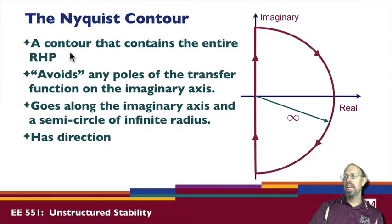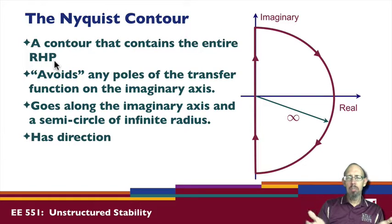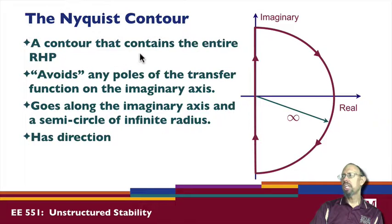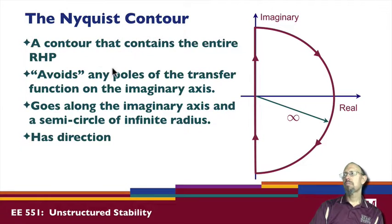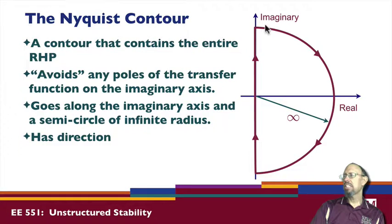The Nyquist contour is basically a contour that contains the entire right-half plane. We often think of a plane as being rectangular, but we can also think of it as a semicircle of radius infinity, which also contains the entire right-half plane. The Nyquist contour has a direction, and in general it avoids any poles of the transfer function that might be on the imaginary axis. It goes along the imaginary axis and then has a semicircle of infinite radius.